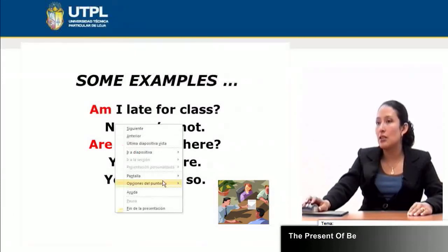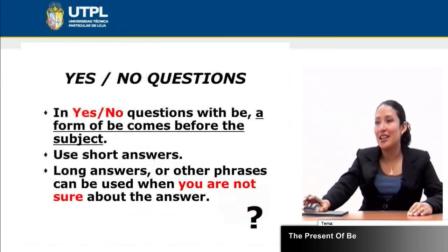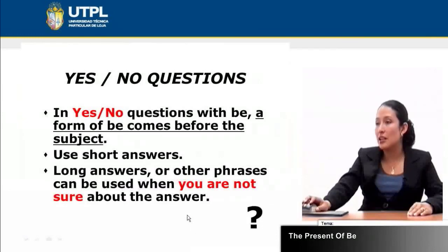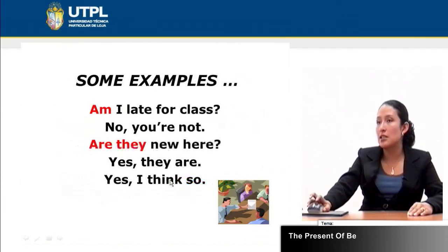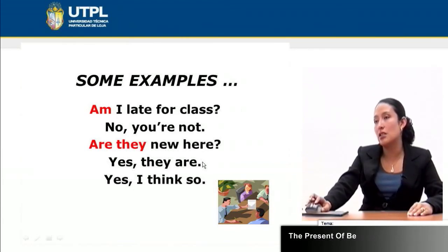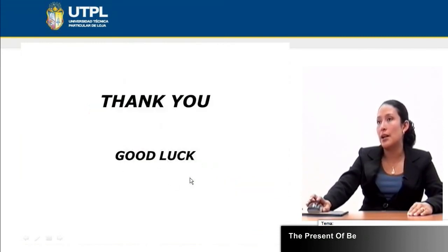In the previous slide, we were noticing that long answers or other phrases can be used when you are not sure about the answer. Remember this — it is very important. When you don't know an answer or are not clear about what you need to say, it is not common to try to repeat the structure that appears in the question. For example, with 'Are they new here?' if you say 'They are not from Loja, they are from Quito' — that means you are not sure about the answer. And that is all about this presentation.